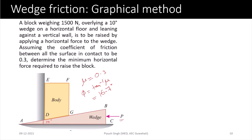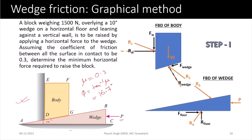The first step is to draw the space diagram, which is already available. The second step is to draw the free body diagram of the body and the wedge. We need all the angles: phi is 16.7 degrees, alpha is 10 degrees. R1 makes angle phi with horizontal, R2 makes angle alpha plus phi with the vertical. The angle that R3 makes with the vertical is also alpha plus phi, because R2 and R3 are on the same line of action.